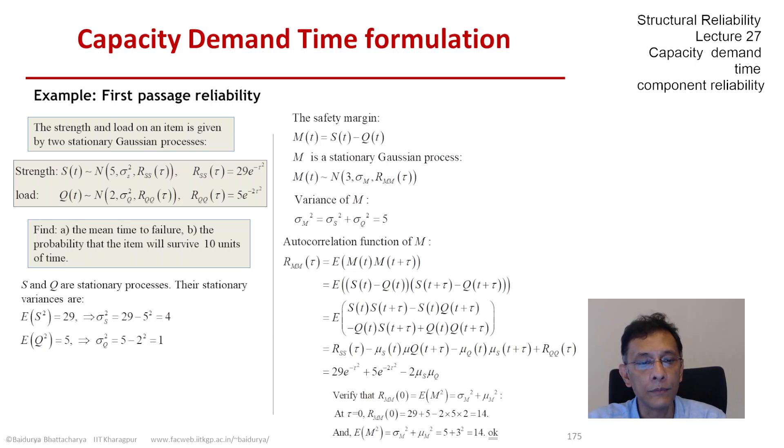R_mm(0) would be by definition E[M²], and that is clearly correct. We find that at tau equals 0, R_mm(0) by the above formula is 14, and E[M²] is also 14. So we have derived this correctly.